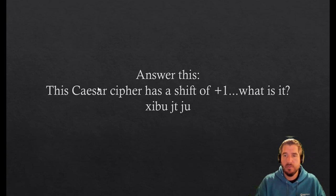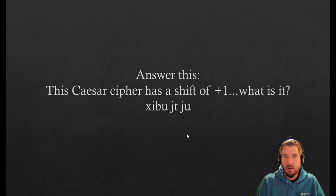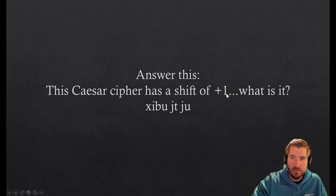What is it? I want you to pause the video and try to decipher this line right here. Okay, so you thought about it. Hopefully you figured out that it's plus one, so to decipher it we go minus one. The letter before X is W, the letter before I is H, the letter before B is A. So if you keep going, it says 'what is it'—just a little trick there.